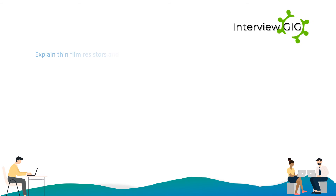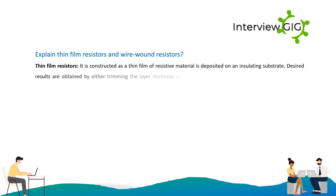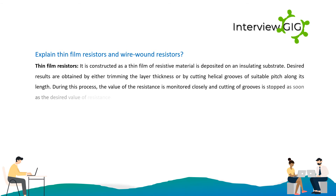Explain thin film resistors and wire wound resistors. Thin film resistors: a thin film of resistive material is deposited on an insulating substrate. Desired resistance values are obtained by either trimming the layer thickness or by cutting helical grooves of suitable pitch along its length. During this process, the resistance is monitored closely and cutting of grooves is stopped as soon as the desired resistance value is obtained.